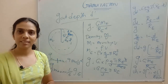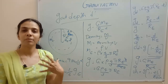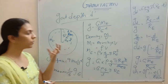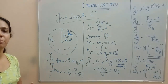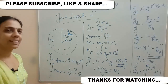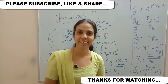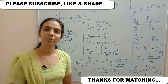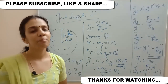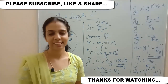Weight is M times g, so since g on the Moon is much less — one-sixth of Earth's gravity — we feel much lighter there; the gravitational attraction is less. These derivations are straightforward. I hope all of you understood. If you like the channel, please don't forget to subscribe. Thank you for watching. Bye.